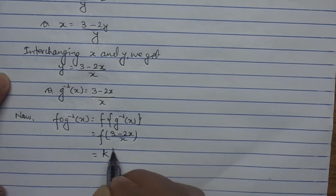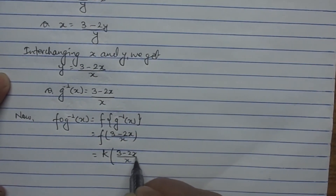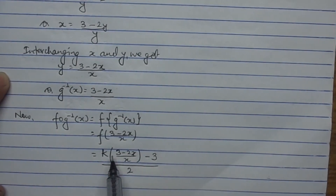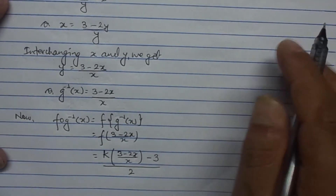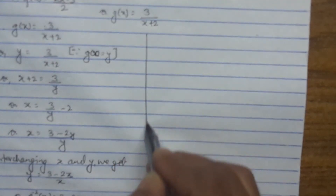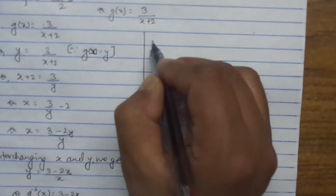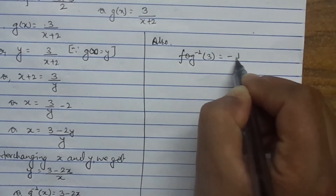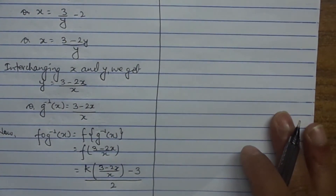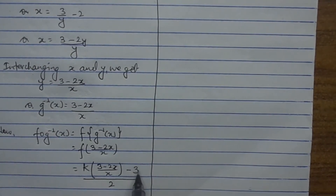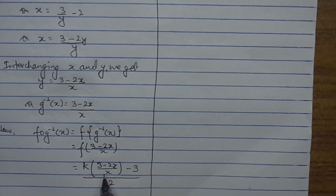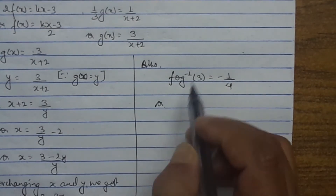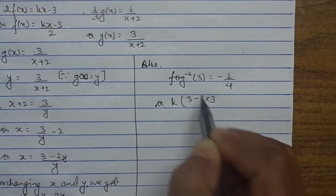So f((3 minus 2x) upon x) equals k times (3 minus 2x) divided by x, all minus 3, divided by 2, since f(x) equals (kx minus 3) upon 2. Now, looking at what is given: fog⁻¹(3) equals minus 1 upon 4. The expression for fog⁻¹(x) is k(3 minus 2x) divided by x, minus 3, all over 2. To find fog⁻¹(3), we input x equals 3.